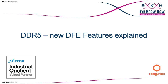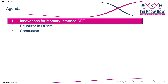In this case we are going to cover four topics — with a backup topic as well. We talk about motivations for memory interface DFE, we talk about the equalizer that is implemented in the memory, and finally the conclusion: what does it mean for your design and your systems.